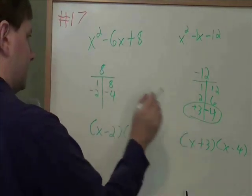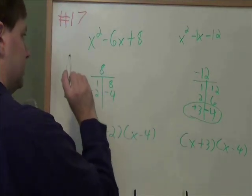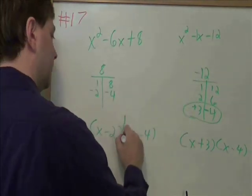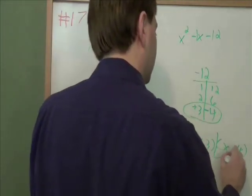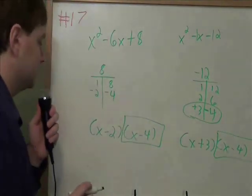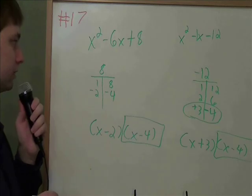And now what's a factor of both of these? x minus 4 is a factor of both of those. And that's your answer, x minus 4.